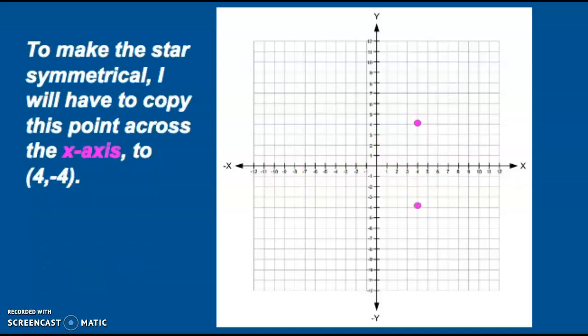To make the star symmetrical, I will have to copy this point across the x-axis to (4,-4).